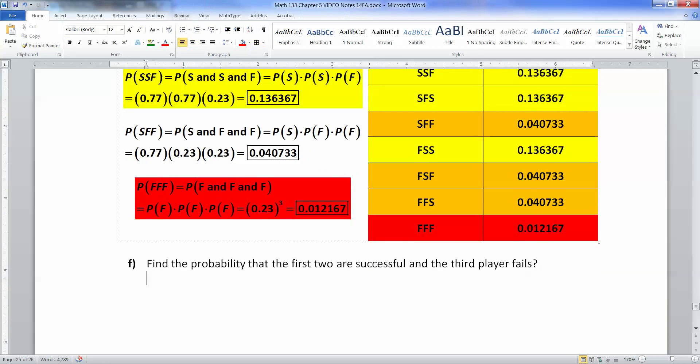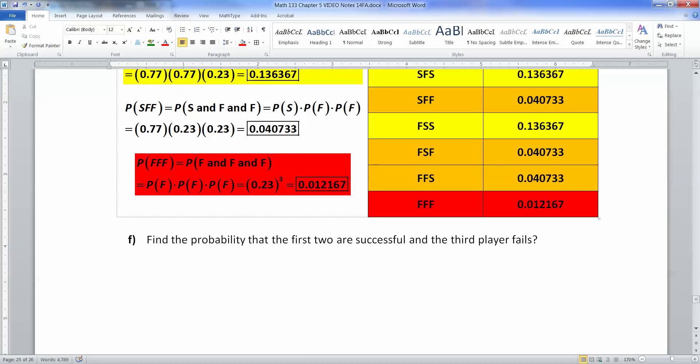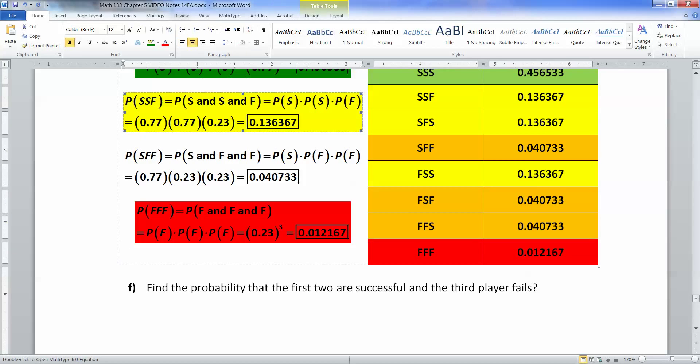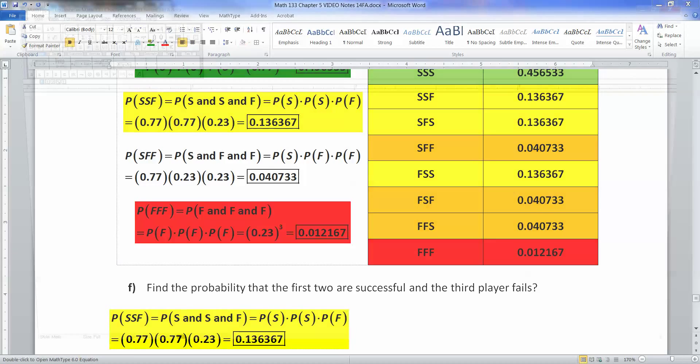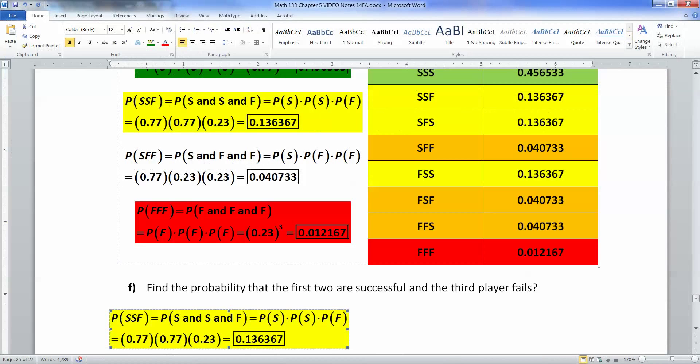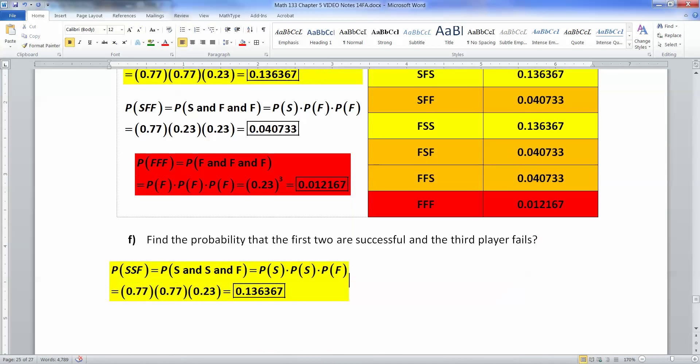All right. So now we're going to find the probability that the first two are successful and the third player fails. So we want the first two to succeed and the third player to fail. Well, we actually already found that. That's right here. So first two succeed, third player fails. That's success, success, and then failure. So that's 0.77 times 0.77 times 0.23, which is 0.136367. So we already did this one. Already found above.